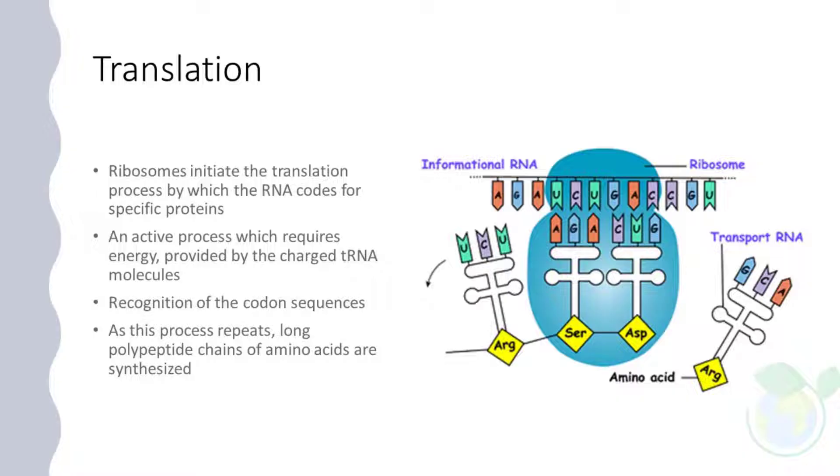Translation is the process by which the RNA codes for specific proteins. It is an active process which requires energy. This energy is provided by the charged tRNA molecules. Ribosomes initiate the translation process. The ribosomes consist of a larger subunit and a smaller subunit. The larger subunit, in turn, consists of two tRNA molecules placed close enough so that peptide bond can be formed at the expense of enough energy. The mRNA enters the smaller subunit which is then held by the tRNA molecules of the complementary codon present in the larger subunit. Thus, two codons are held by two tRNA molecules placed close to each other and a peptide bond is formed between them. As this process repeats, long polypeptide chains of amino acids are synthesized.